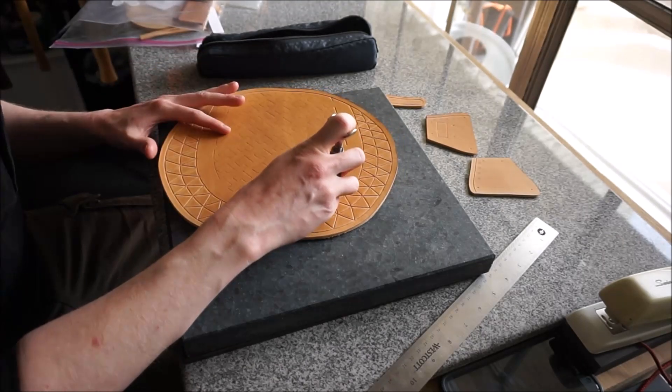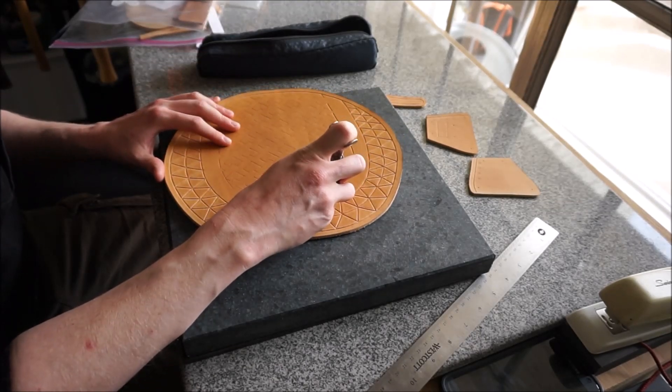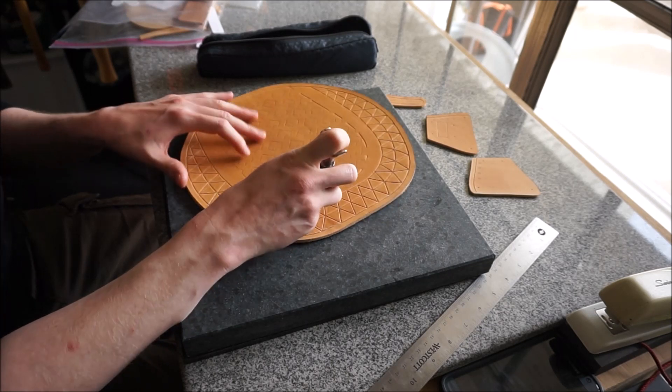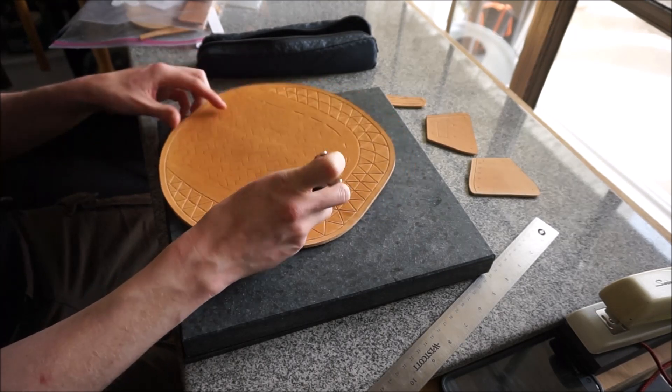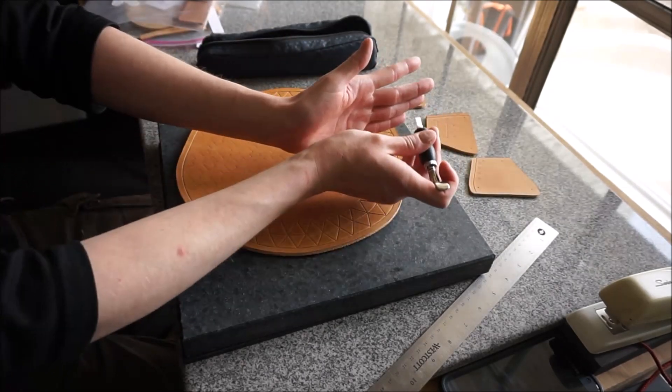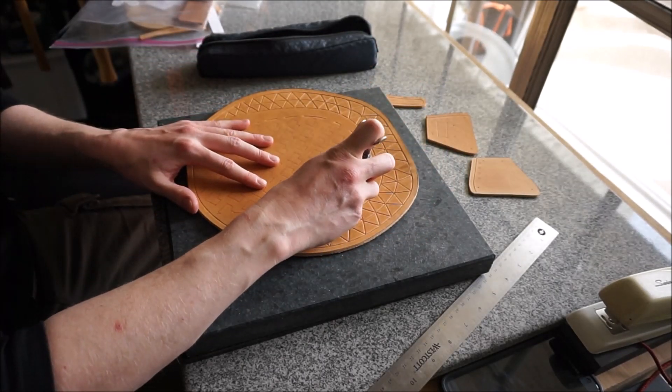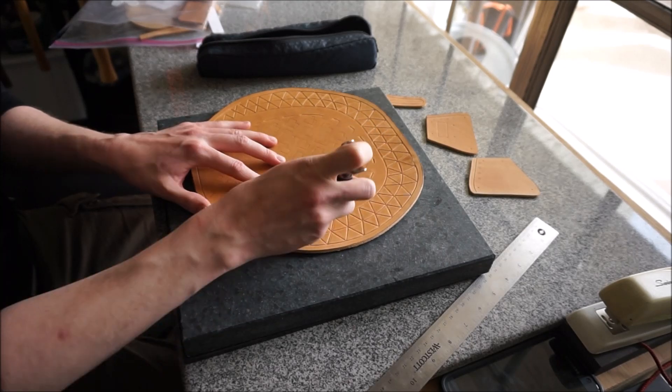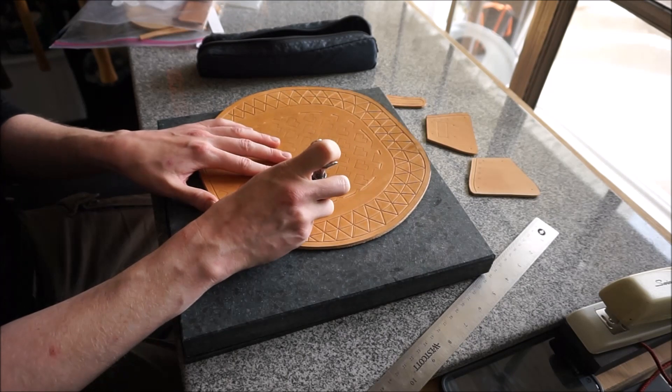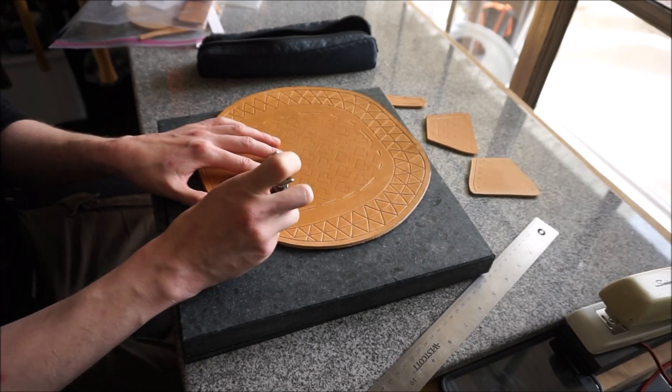And that'll cause you problems when you go to stamp it, because the reason you want these nice v-shaped channels is because it makes it really easy for your stamps to follow it when you go to bevel it. Like it's a little path that it slides right along. If your cut lines are too shallow, the stamp will not stay in them. It'll walk off them and kind of wander away and stamp where you don't want it to stamp.